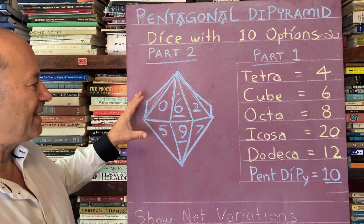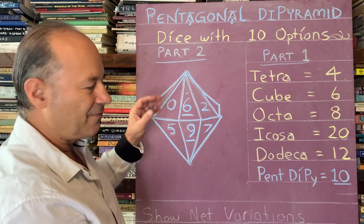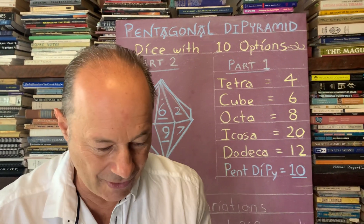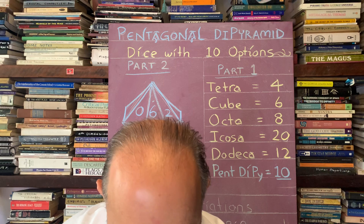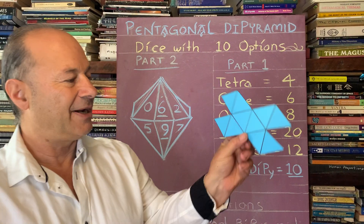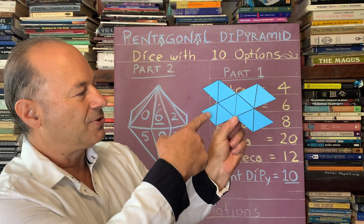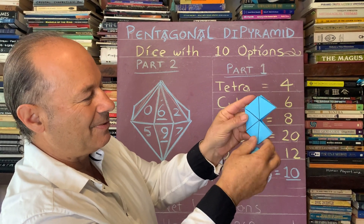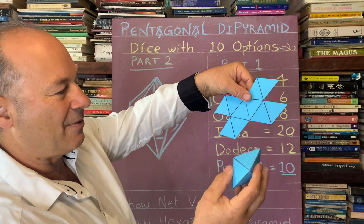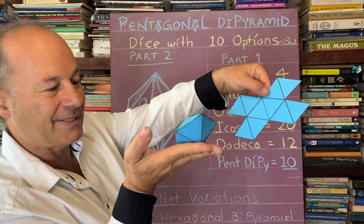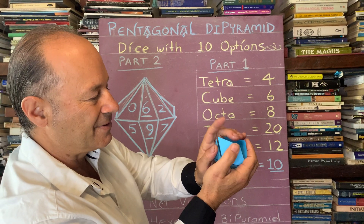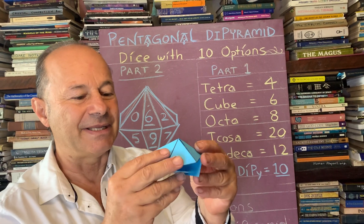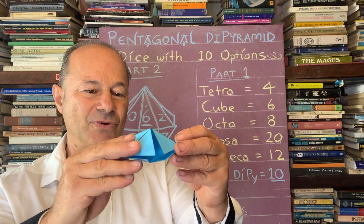To create this shape yourself, you need what's called a net — a flat diagram that folds into the 3D form. The net shows the triangles: one, two, three, four, five on top and five on the bottom, doubled. When you fold it up it makes the form, though it's quite flat and squashed.